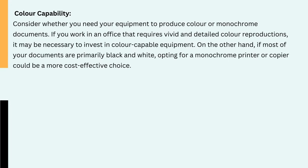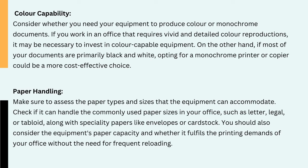2. Color capability. Consider whether you need your equipment to produce color or monochrome documents. If you work in an office that requires vivid and detailed color reproductions, it may be necessary to invest in color-capable equipment. On the other hand, if most of your documents are primarily black and white, opting for a monochrome printer or copier could be a more cost-effective choice. 3. Paper handling. Make sure to assess the paper types and sizes that the equipment can accommodate. Check if it can handle commonly used paper sizes such as letter, legal or tabloid, along with specialty papers like envelopes or cardstock. Also consider the equipment's paper capacity and whether it fulfills the printing demands of your office without the need for frequent reloading.